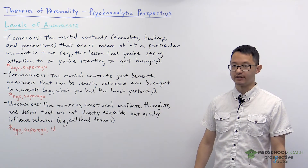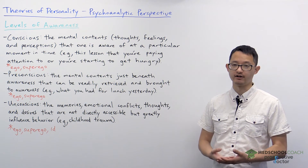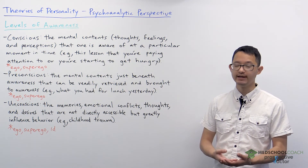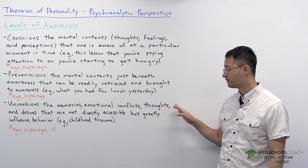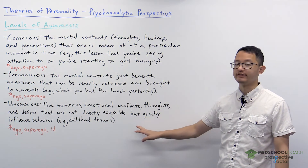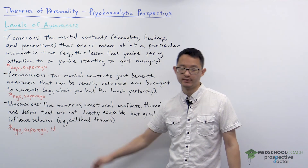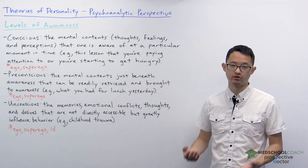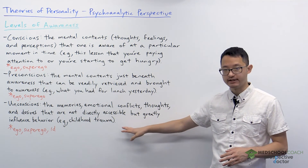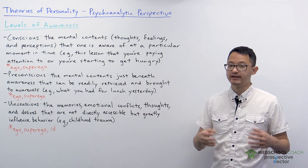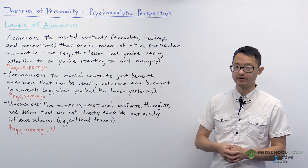Finally, we have our unconscious. As we've mentioned multiple times, the unconscious is very important to Freud in determining our behavior. The unconscious consists of our memories, emotional conflicts, thoughts, and desires that are not directly accessible, but greatly influence behavior. An example would be childhood trauma. Freud thought that these kinds of memories and emotional conflicts are in our unconscious, but they still greatly determine our behaviors.